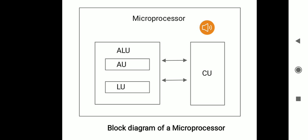See the block diagram in this slide. It shows a microprocessor having two components: the arithmetic logic unit represented as ALU and the control unit represented as CU. The arithmetic logic unit is again subdivided into arithmetic unit represented as AU and the logical unit represented as LU.